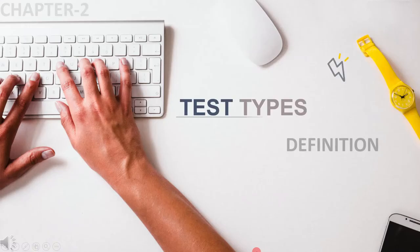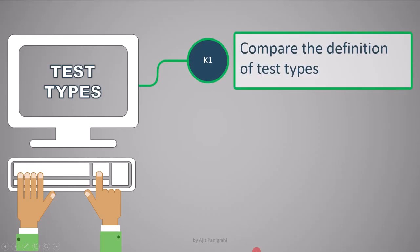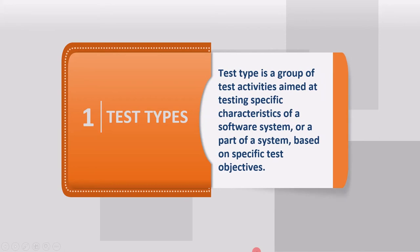In this lecture we will focus on the definition of test types. The learning objective is to compare the definition of test types. A test type is a group of test activities aimed at testing specific characteristics of a software system or a part of the system, based on specific test objectives. In simple terms, we test specific characteristics of the software.